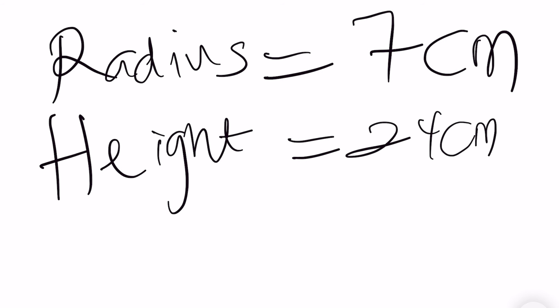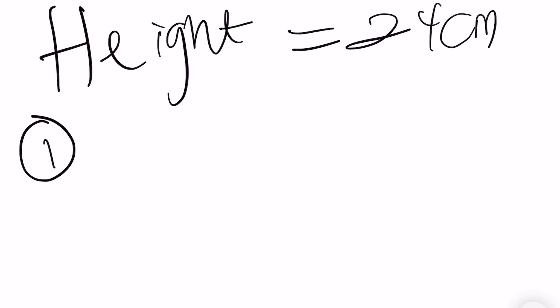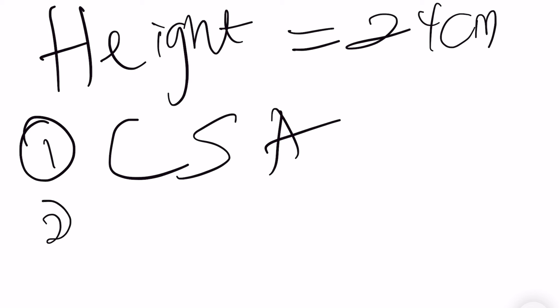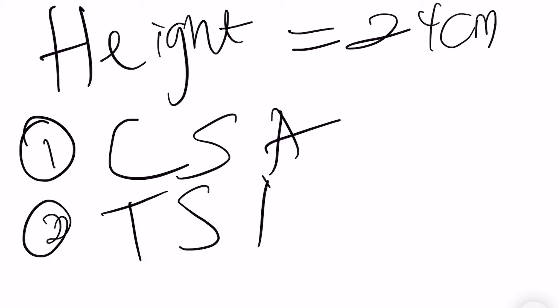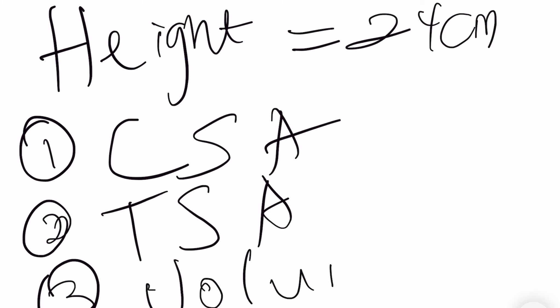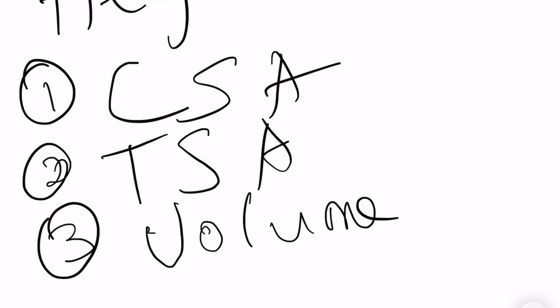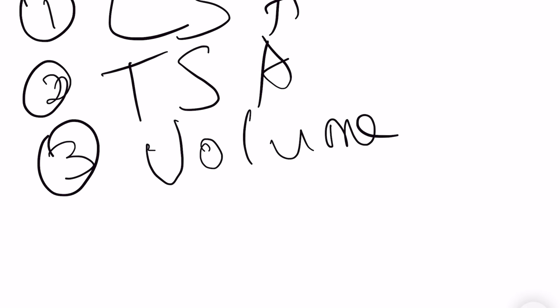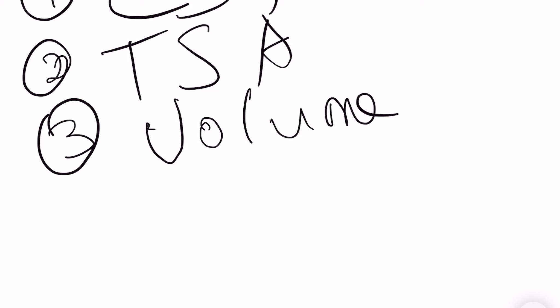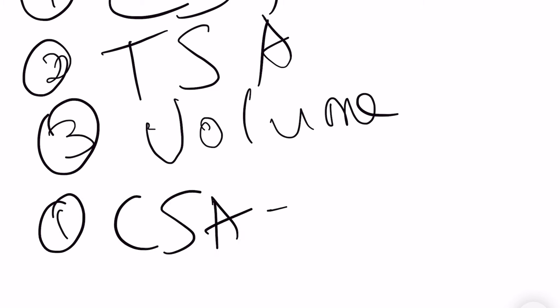Now, we have our radius to be 7 cm and our height to be 24 cm. We have to look for our CSA, our TSA, and the volume of a cone. To find our CSA, the formula is pi R L, where L is the slant height.